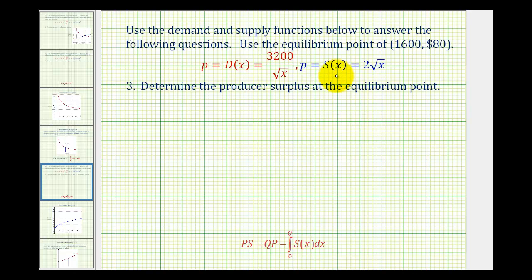Given the supply and demand functions, we've now found the equilibrium point as well as the consumer surplus. We want to finish by determining the producer surplus given the same demand and supply functions and the equilibrium point.